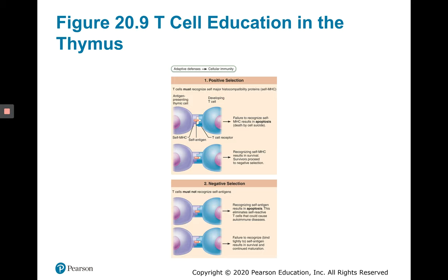Figure 20.9 illustrates T cell education in the thymus. We want to ensure that T cells recognize the major histocompatibility proteins but do not recognize self-antigens — we want them to be self-tolerant and bind to non-self-antigens. Any T cells that don't pass these two selection processes are deleted via apoptosis.